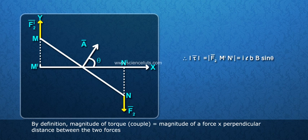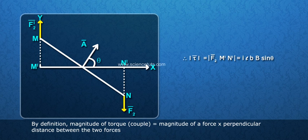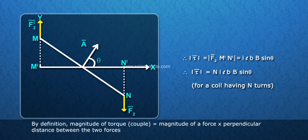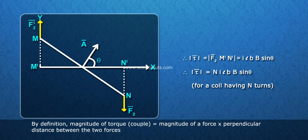Therefore, modulus of tau bar equals to modulus of F2 bar M dash N dash equals to ILB sin theta. Therefore, modulus of tau bar equals to NILB sin theta for a coil having N turns.